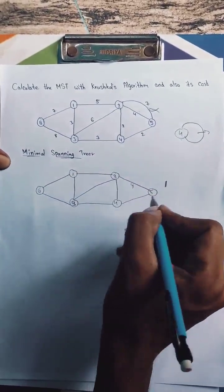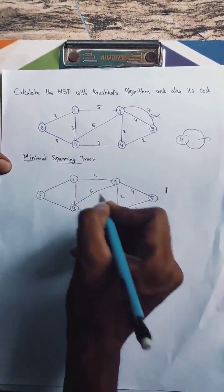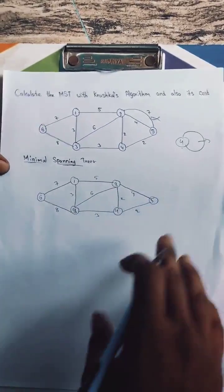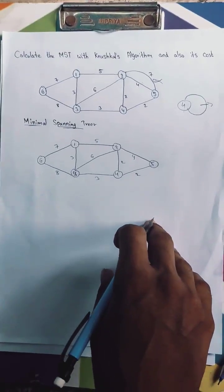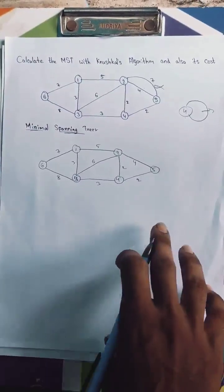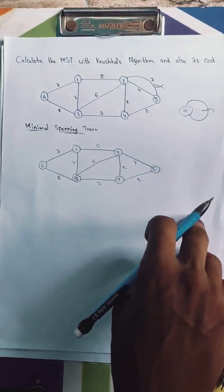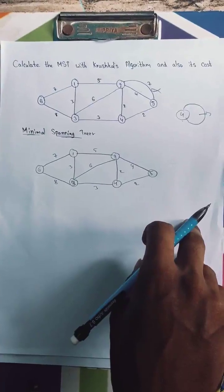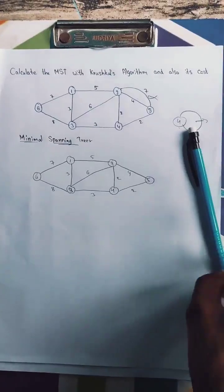After removing loops and parallel edges, we list all the edges and arrange them in ascending order based on their cost. The edge weights present are: 2, 2, 3, 3, 4, 5, 6, 7, 8. We have to take the edges in ascending order and keep them ordered based on cost.